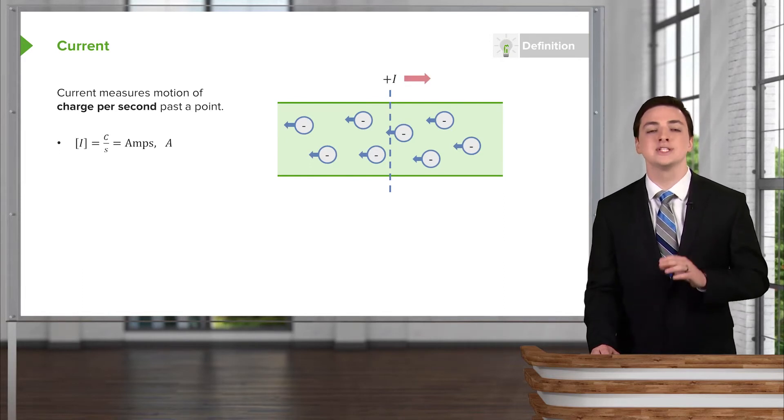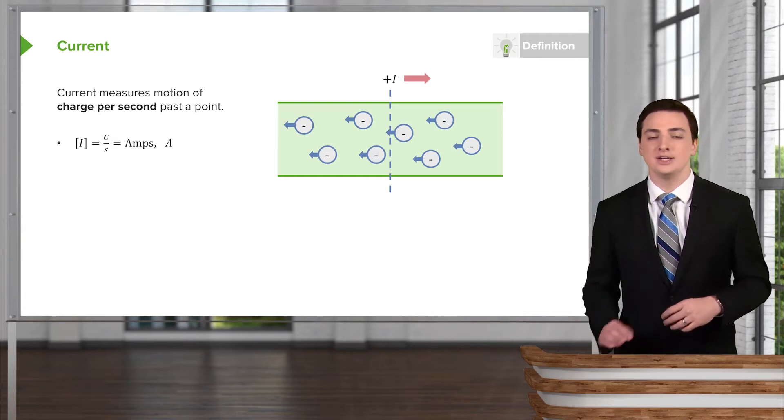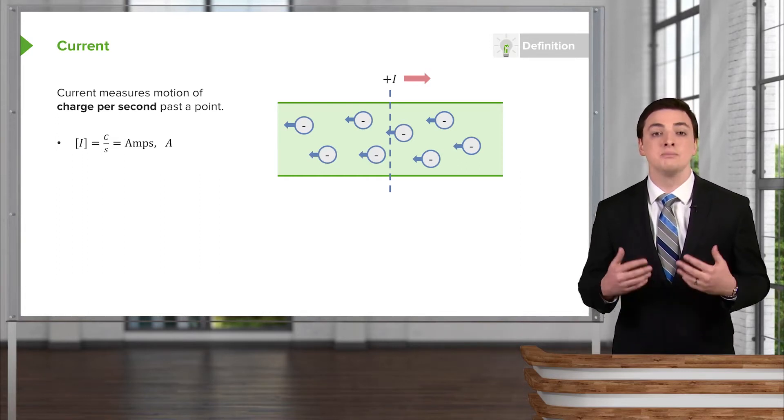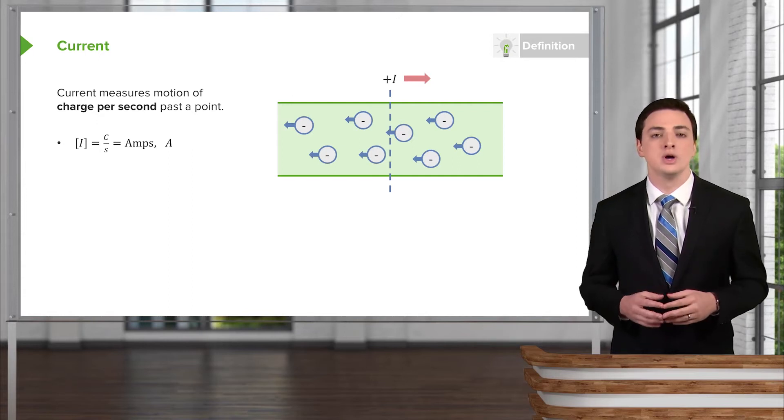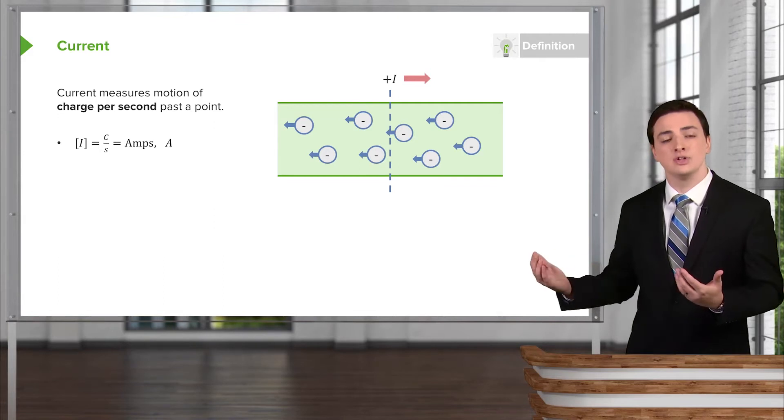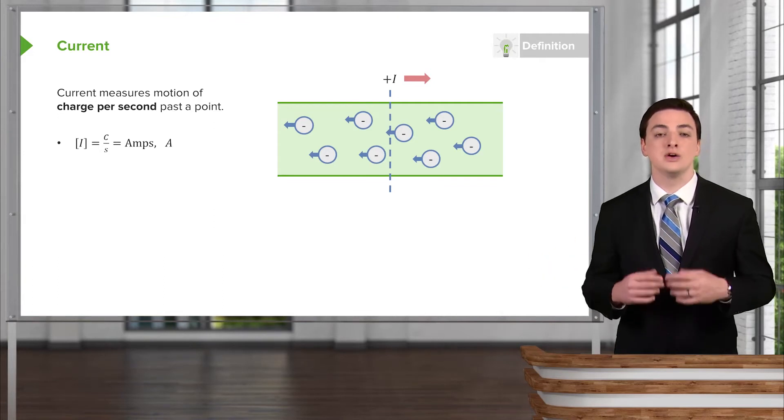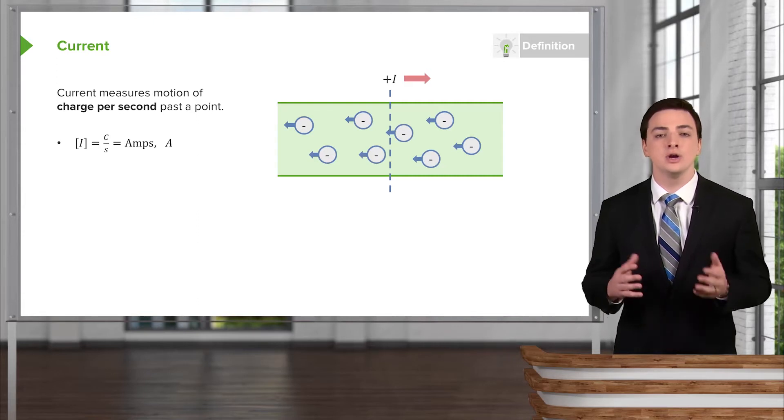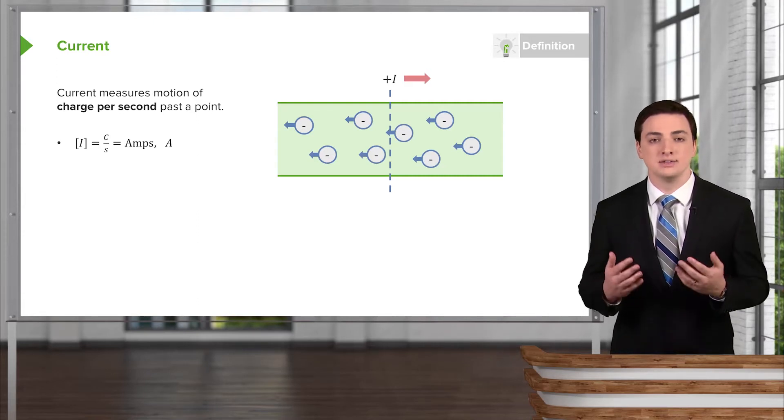Interestingly, something important to know is that by historical convention, something of a historical accident, we actually measure current in the positive direction. So even though electrons themselves, the actual electricity of the electrons flowing through the circuit, is the flow of negative charges, which is what the electrons are, we define current to be the flow of positive charge.